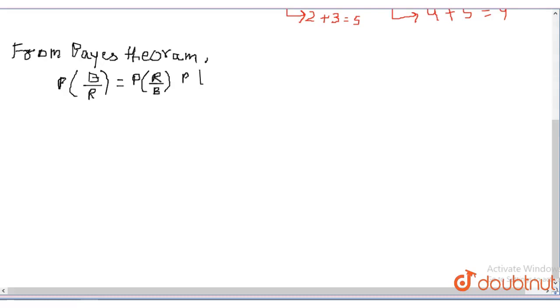Product of probability of B upon probability of R upon probability of R.